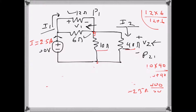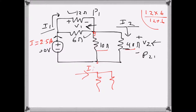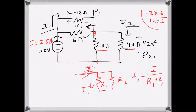Now I will apply the current divider rule. When a current divides between two parallel paths, the current divider rule states that the current through R1 is I1 = I × R2 / (R1 + R2), and similarly I2 = I × R1 / (R1 + R2), where I is the total current and R1, R2 are the two parallel resistances.